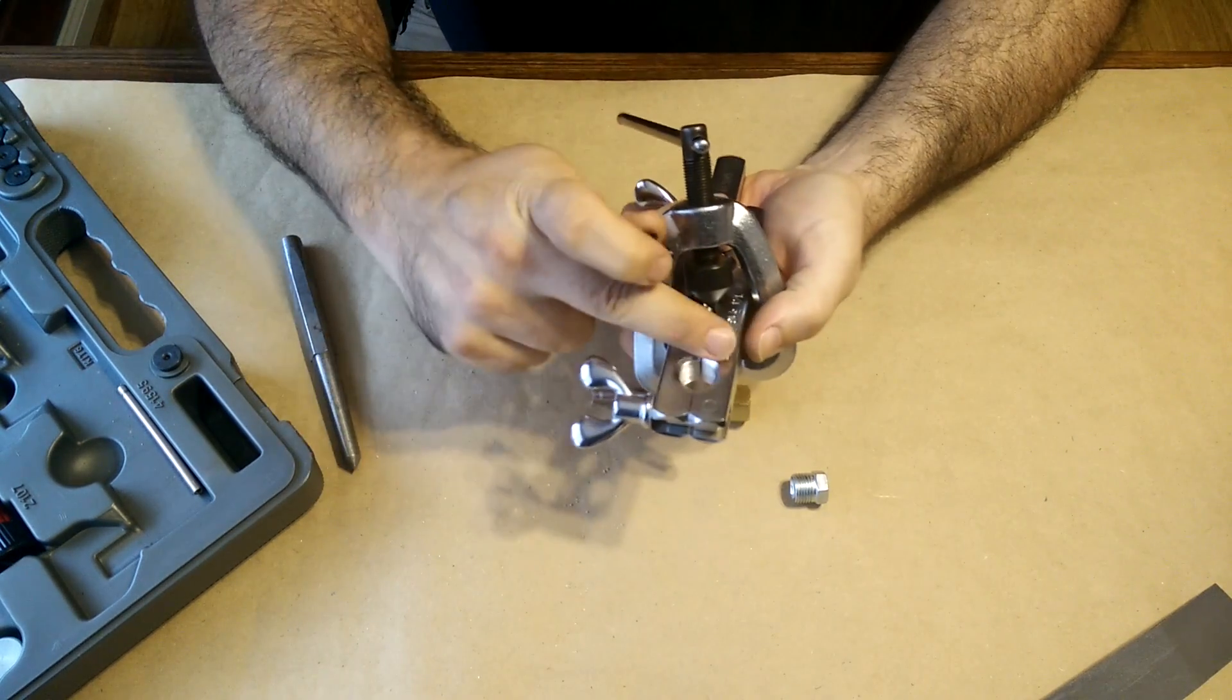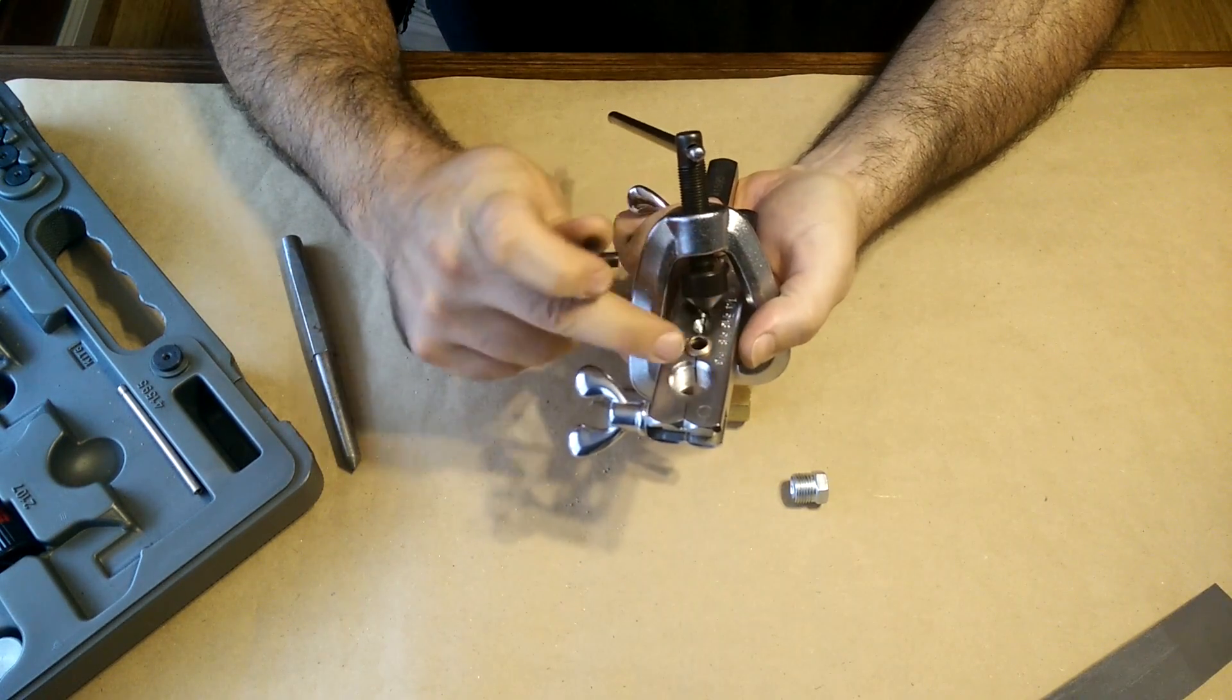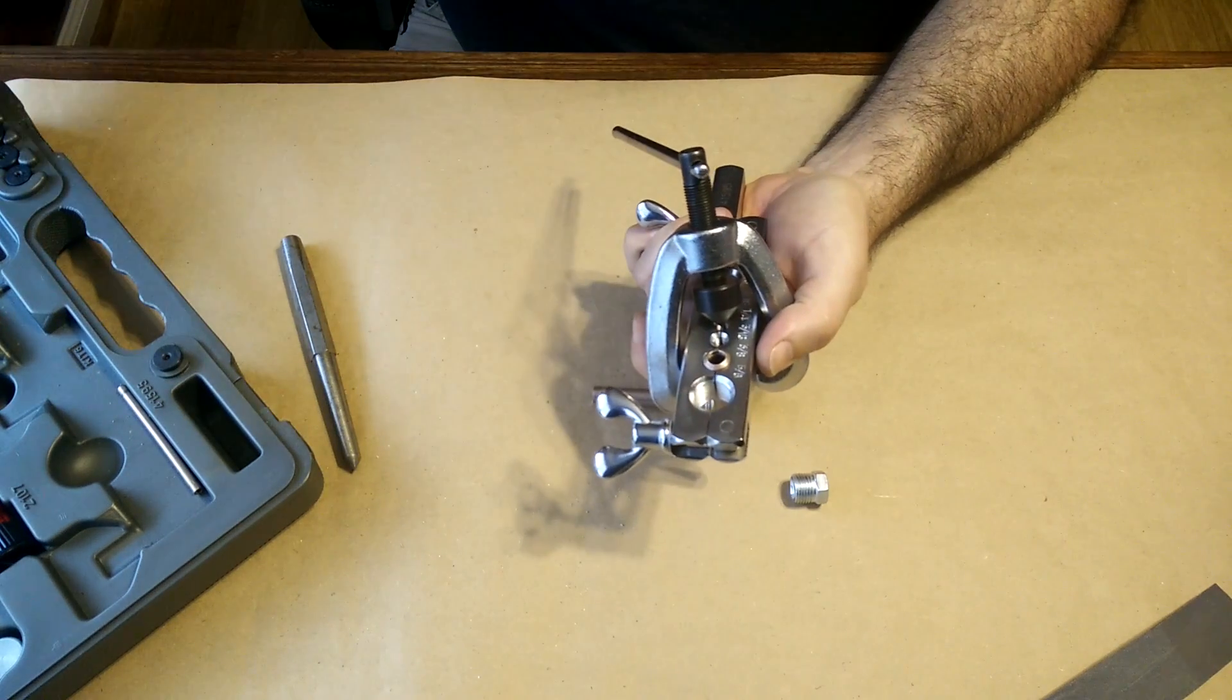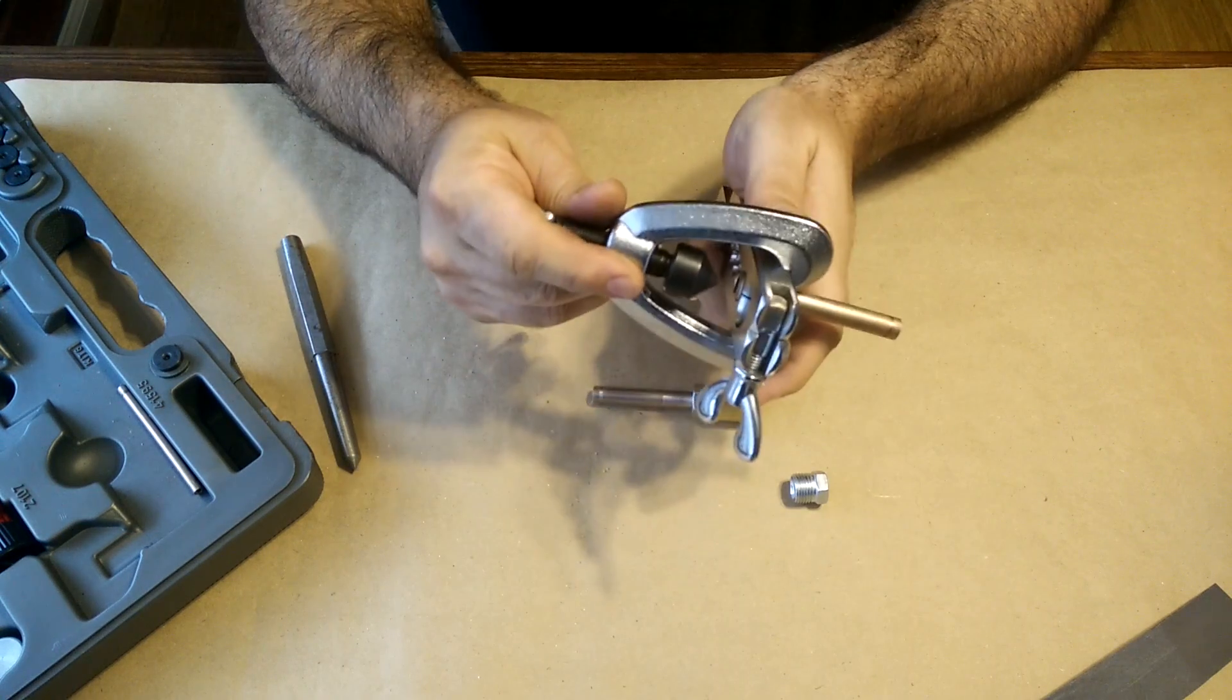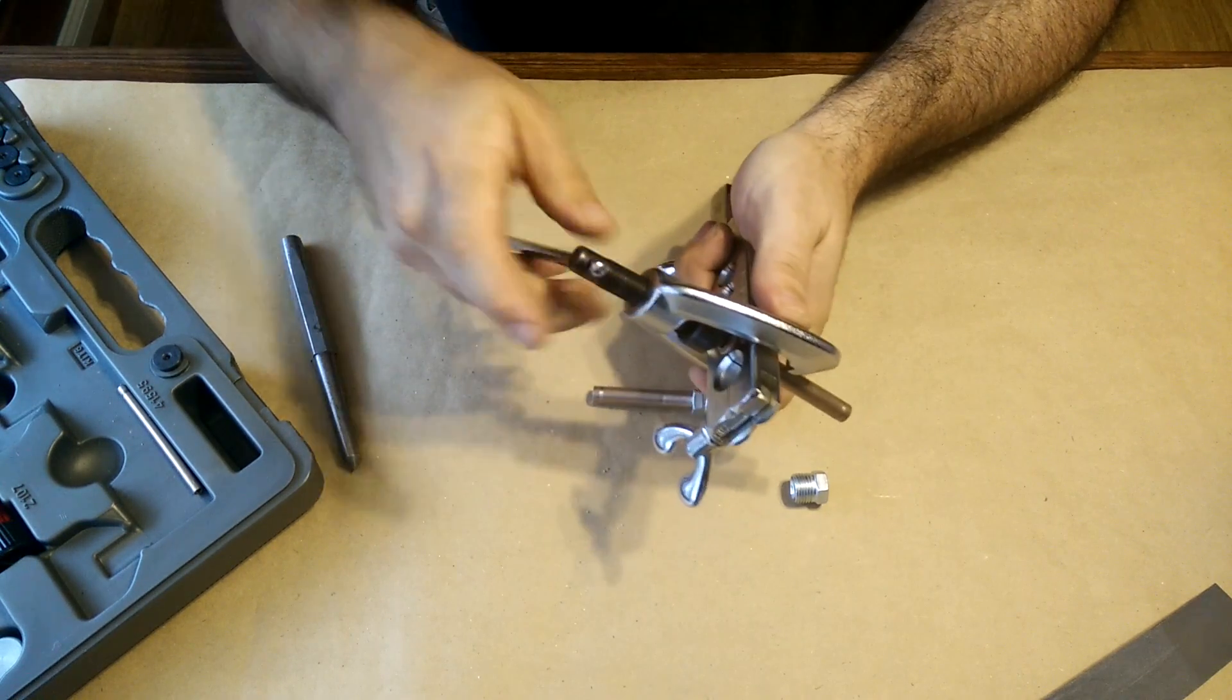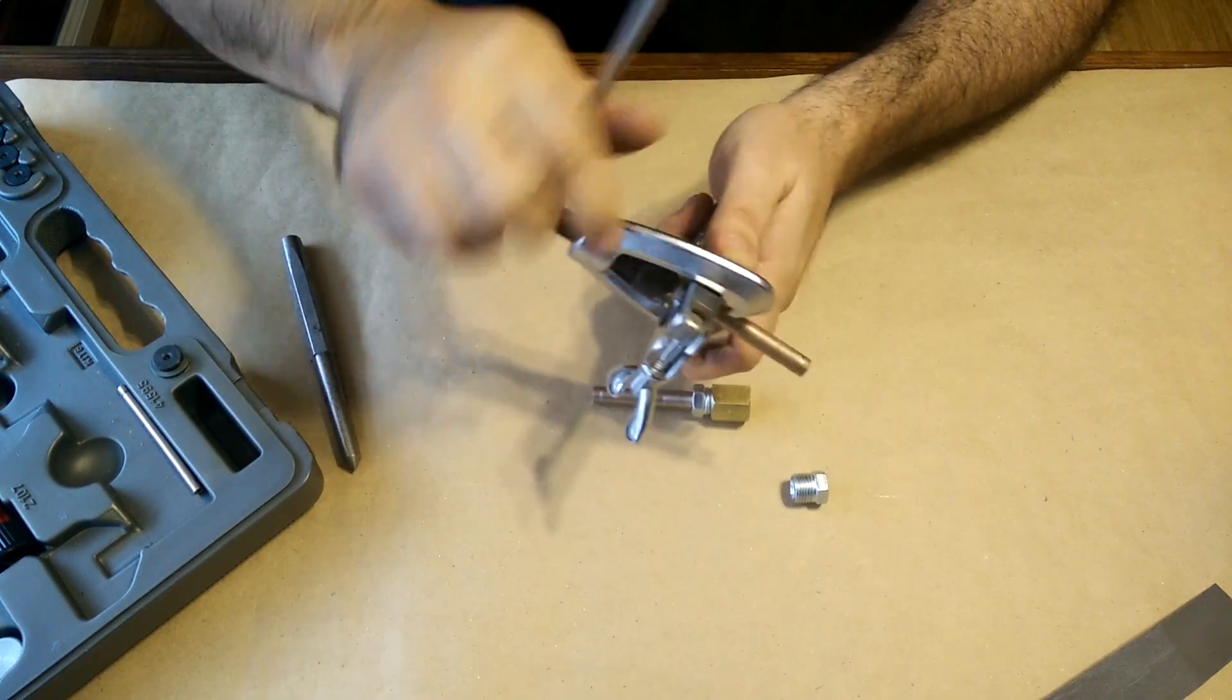So then the die comes out, and you see there's sort of this bubble flare that was created with the die. And then you go back in for a second operation, and that's just to use the cone.